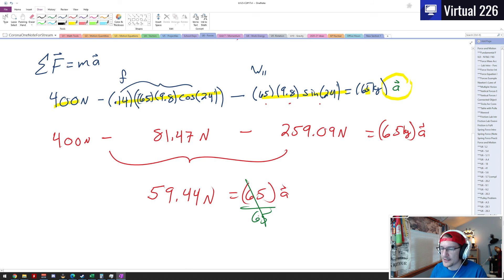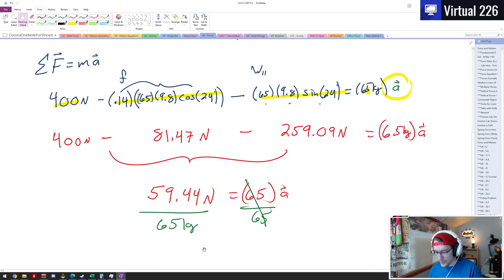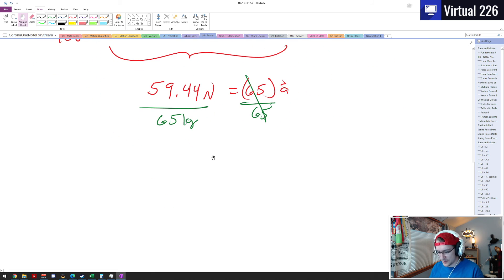So that's everything combined together, equals 65 times a. And at this point we're pretty much done here. We divide each side by 65, we get a final answer of an acceleration of 0.91 meters per second squared. And that's it.